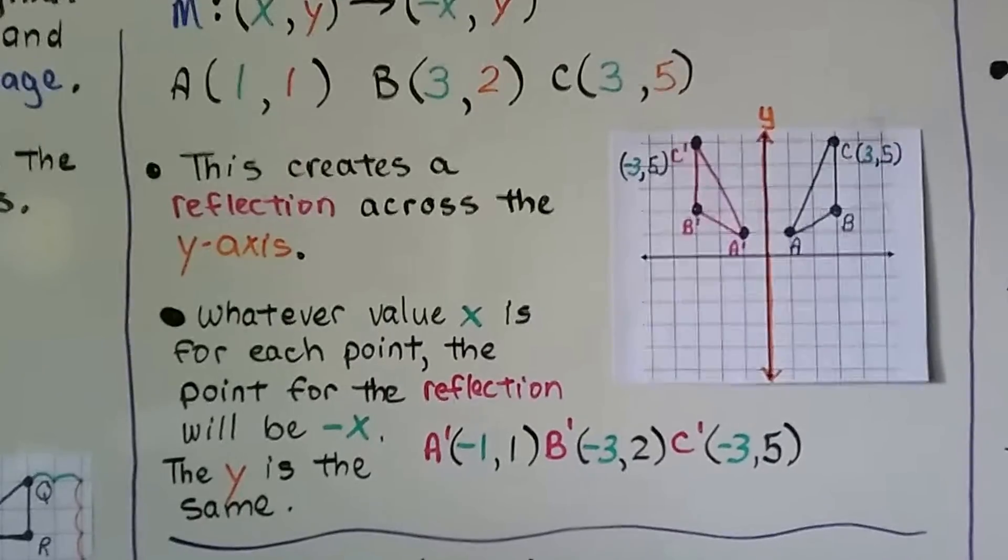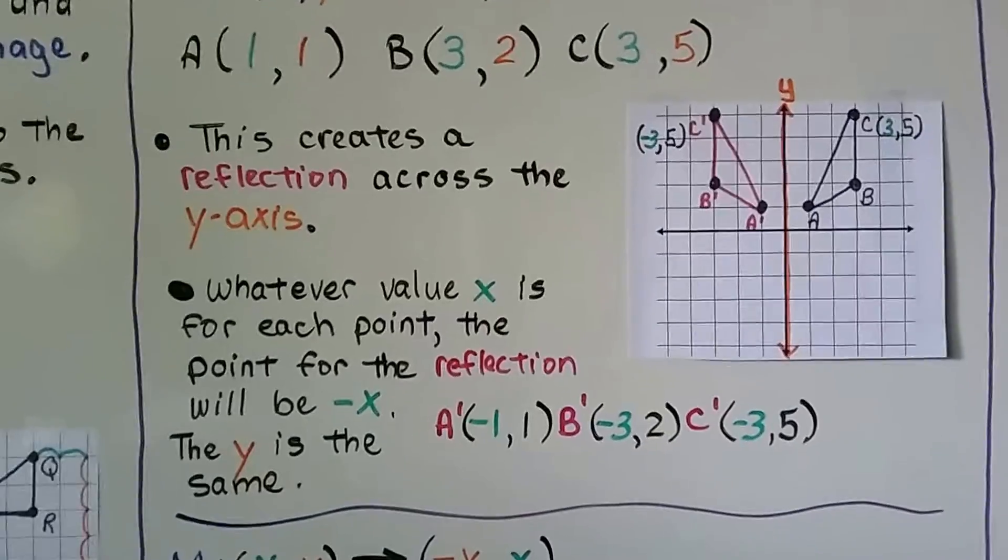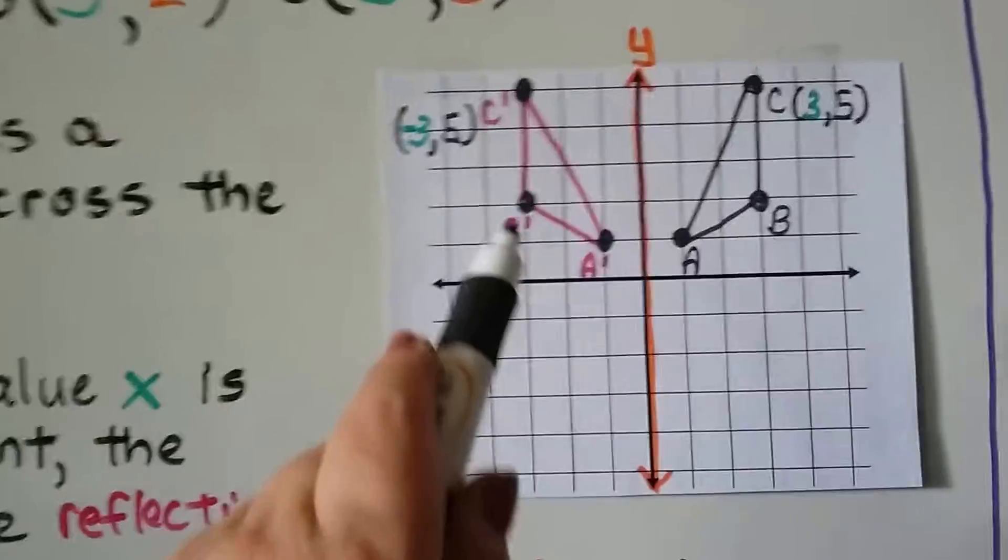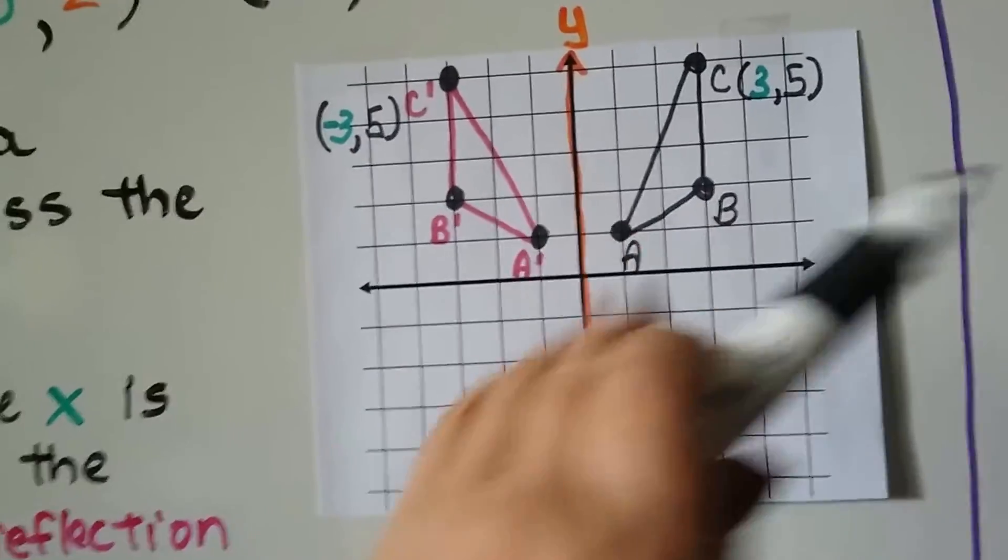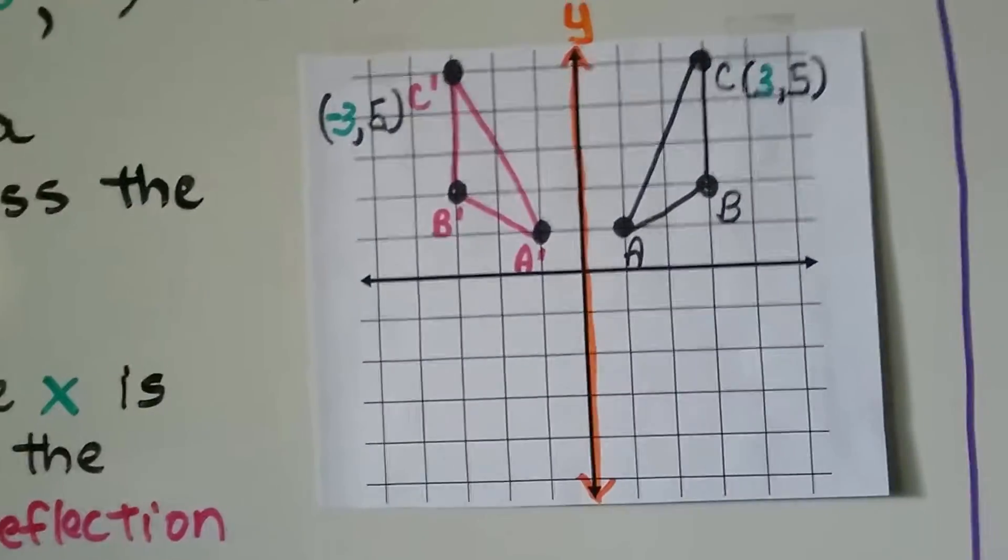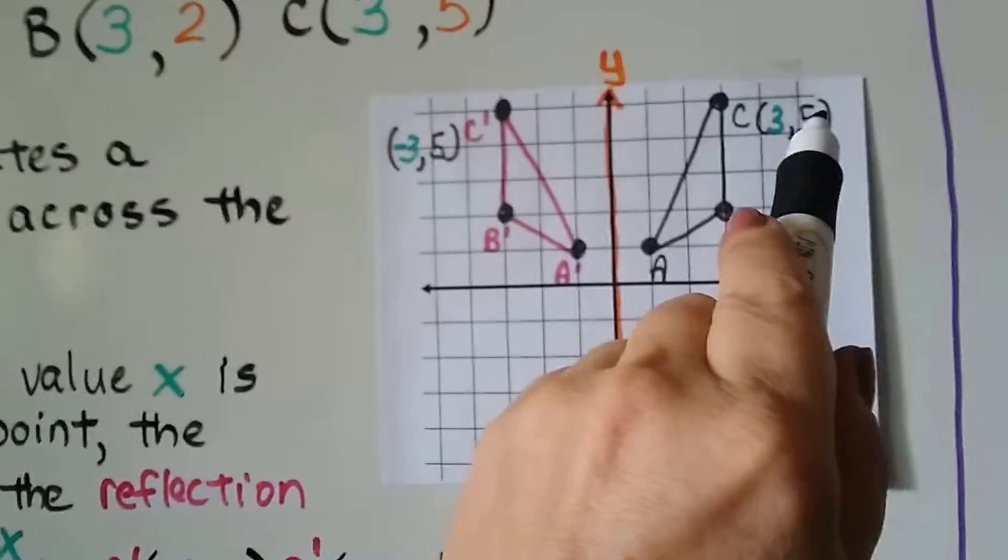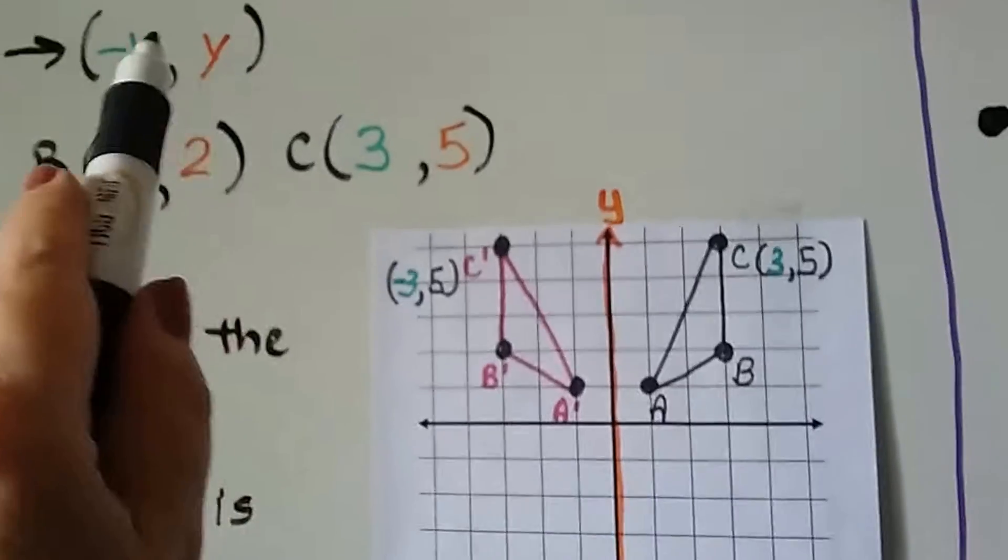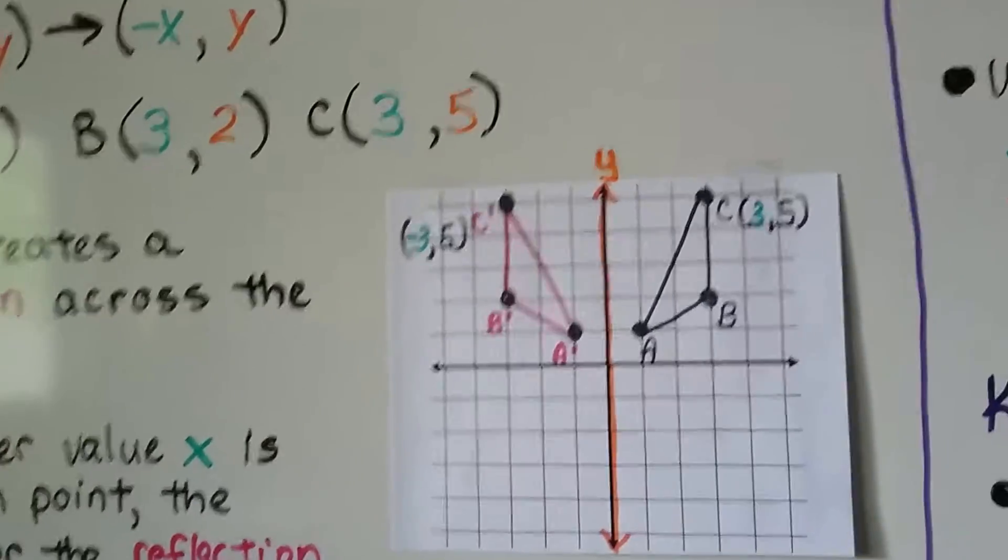So this image flipped to this, this preimage flipped to that image here. You can actually tell because this is the one that has the prime tick marks. There's A, there's A prime. So it flipped over like that. And point C was (3, 5), and we need to do a negative x, so it became (-3, 5) and 5 stayed the same.